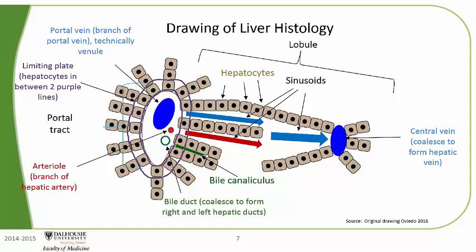The last thing we are going to label is the Kupffer cell. The Kupffer cell is a type of macrophage which resides in the sinusoids. I think of macrophages as part of a clean-up crew, since their job is to eat debris. The Kupffer cell's job in the liver is to remove damaged red blood cells, bacteria, or debris from the sinusoids.